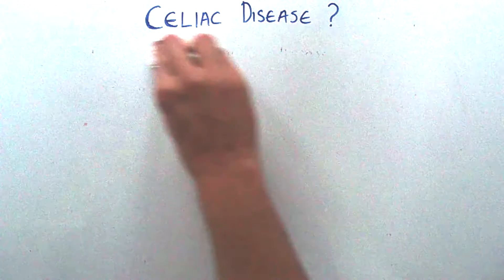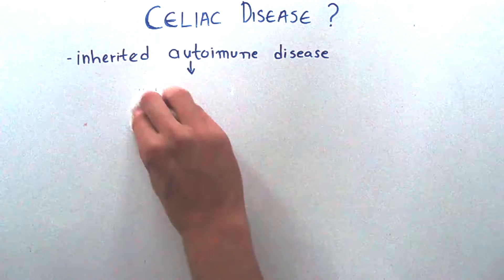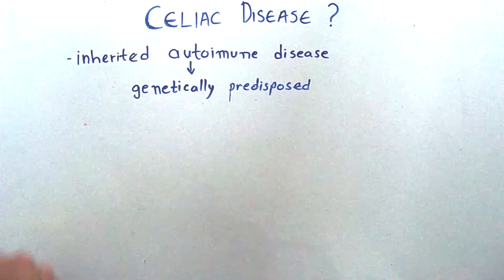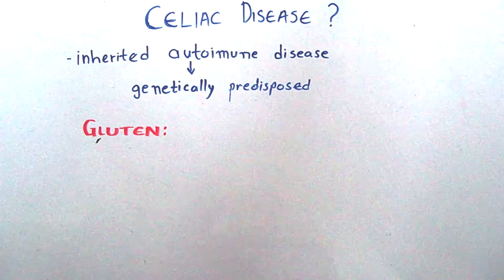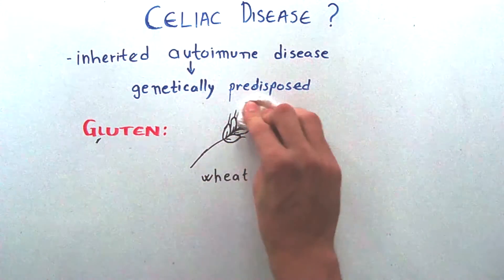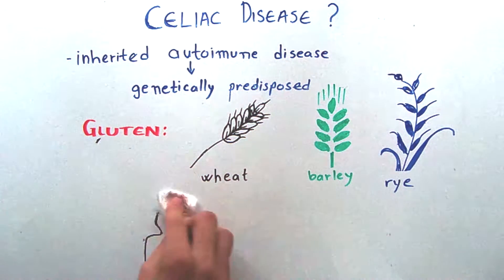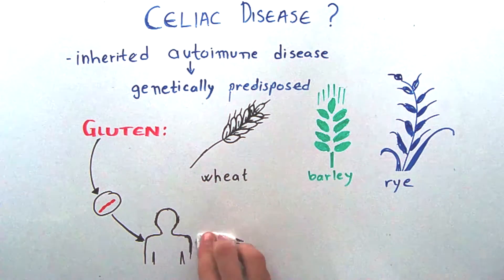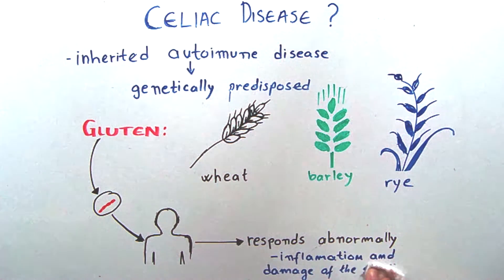Let's get back to our topic. What is celiac disease? Celiac disease is an inherited autoimmune disease which affects only people who are genetically predisposed. Symptoms are triggered by gluten, the name given to a certain protein in wheat, barley and rye. In celiac disease, the body's immune system responds abnormally to gluten, resulting in inflammation and damage to the lining of the small intestines.